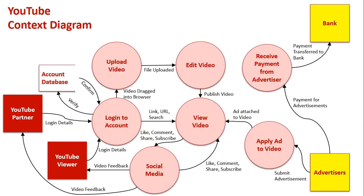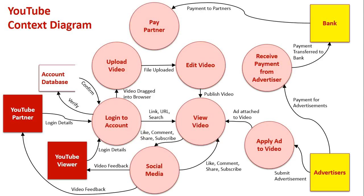Those advertisements are then attached to existing YouTube partners' videos and applied to them. Because they've been attached to YouTube partners' videos, the bank then needs to pay those YouTube partners, based on clicks and how many likes they're getting. They get a certain amount of payment, and then a payment receipt is sent to that partner based on the performance of the ads on those videos.